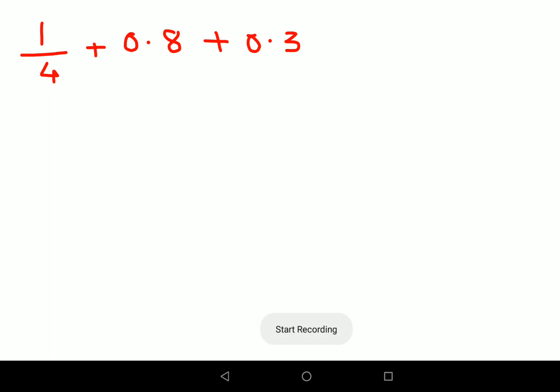Welcome everyone. Today we are going to figure out what is the value of 1 upon 4 plus 0.8 plus 0.3. Now I'm going to show you two methods. One method is very basic which a lot of people should know.